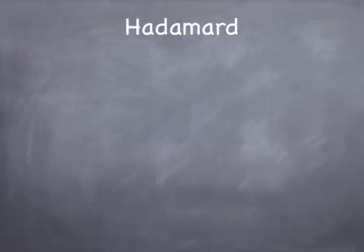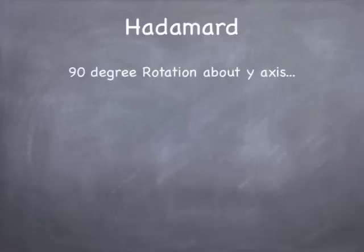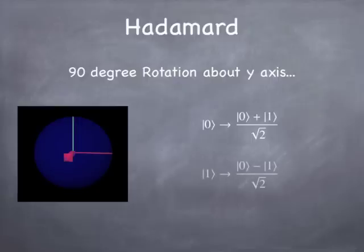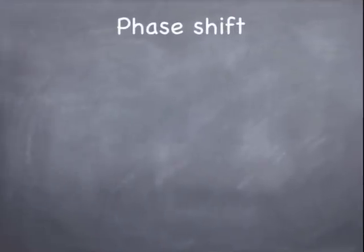Another extremely useful gate we need for today's algorithm is the Hadamard gate. The Hadamard gate is essentially a 90-degree rotation about the y-axis. It takes the |0⟩ ket and converts it to (|0⟩ + |1⟩)/√2, and it takes the |1⟩ ket and converts it to (|0⟩ − |1⟩)/√2. If you think of 0 and 1 as spin up and spin down, these are the |+x⟩ and |−x⟩ states — you're converting spin up or spin down into plus-x and minus-x.